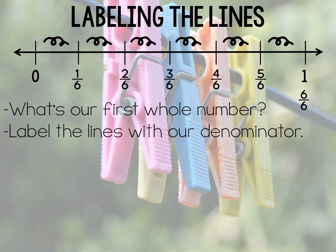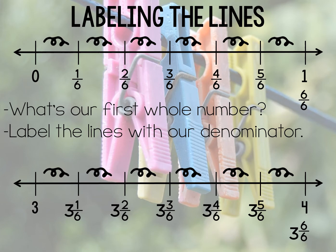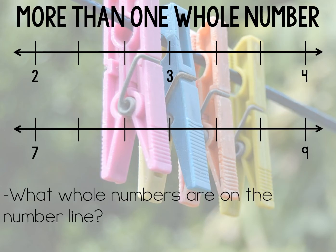I always have my students do the final fraction to show that it is equivalent to one whole. We can also talk about what this looks like when the first whole number is not zero — say it's three. Students learn to carry the three with them as they label each line. When they reach the whole number four, we talk about how three and six-sixths, or one whole, is equivalent to three plus one, or four.